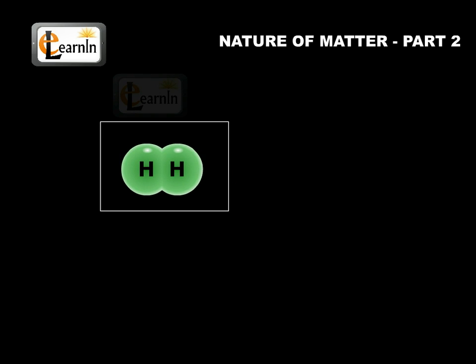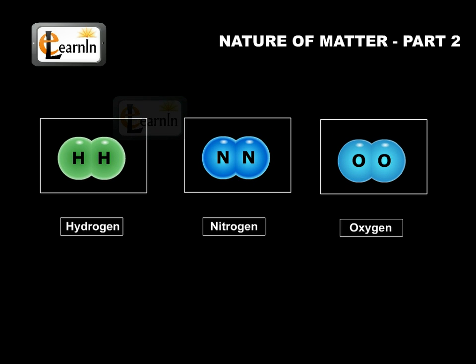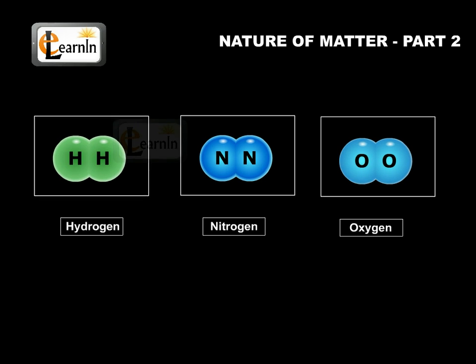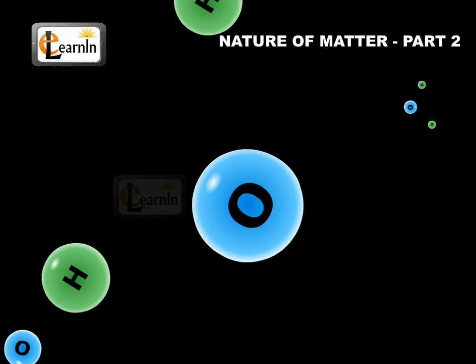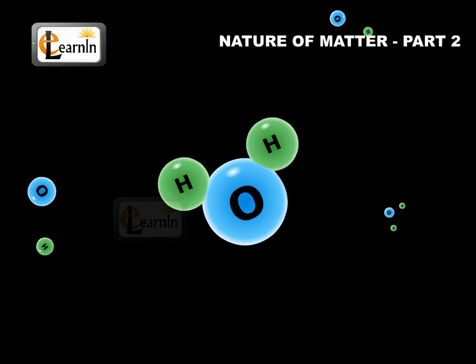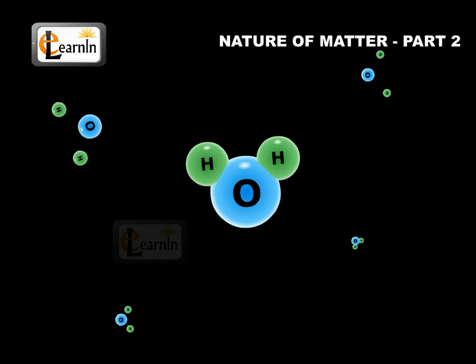Thus, hydrogen, nitrogen, and oxygen gases consist of molecules in which two atoms combine to give their respective molecules. When two or more atoms of different elements combine, the molecule of a compound is obtained.